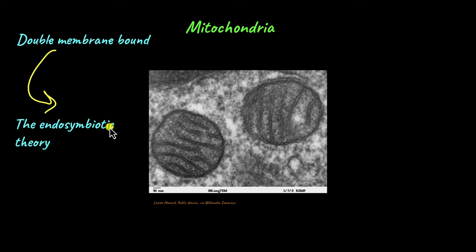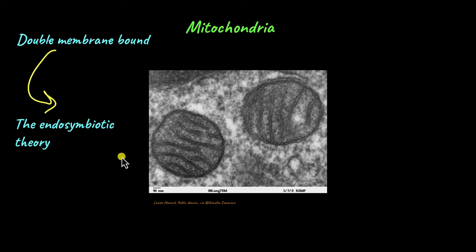a primitive bacterium that was capable of performing aerobic respiration on its own. And when the early eukaryotic ancestor engulfed that primitive bacterium, it helped the eukaryotic cell — the bacterium helped the eukaryotic cell — and over time the bacterium lost its individuality and became part of the eukaryotic cell as the mitochondria.